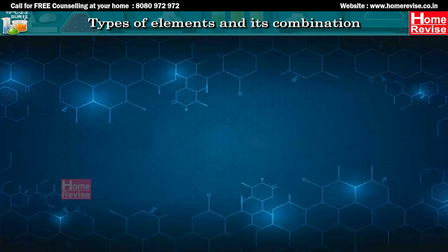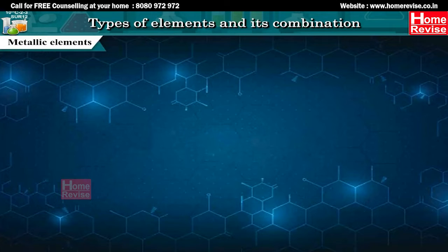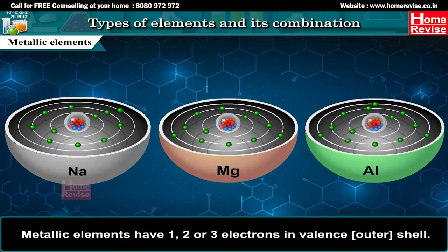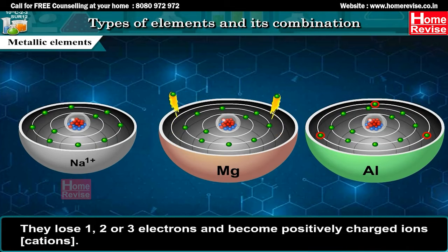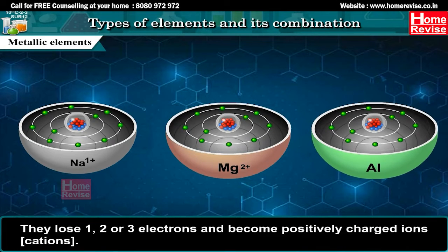Types of Elements and their Combinations. Metallic elements have 1, 2 or 3 electrons in the valence, i.e. outer shell. They lose 1, 2 or 3 electrons and become positively charged ions — cations.